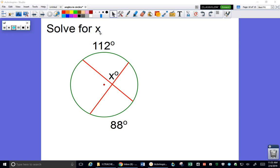In this first problem, we're asked to solve for x. Hopefully you notice that this is an interior angle, one that is formed by two chords. If you remember the property, the interior angle equals half of the sum of the intercepted arcs.